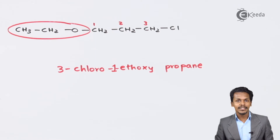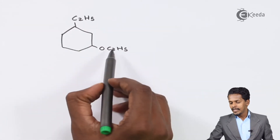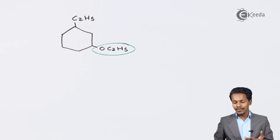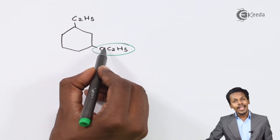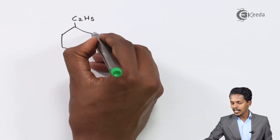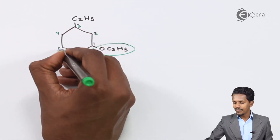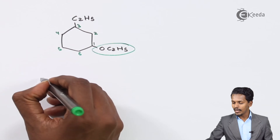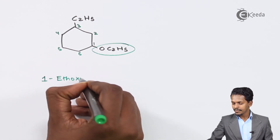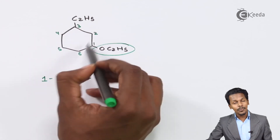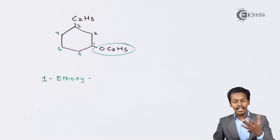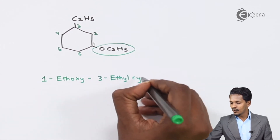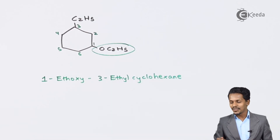The next ether has a C2H5 group attached to an oxygen atom, making it an ethoxy (alkoxy) group. The carbon bearing the alkoxy is carbon 1, then 2, 3, 4, 5, and 6 — so the parent chain is cyclohexane. The ethoxy is on carbon 1, giving 1-ethoxy. On the third carbon position we find a C2H5 (ethyl) group, giving 3-ethyl. Therefore the IUPAC name is 1-ethoxy-3-ethylcyclohexane.